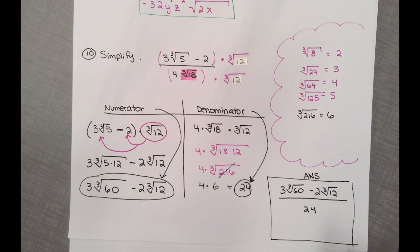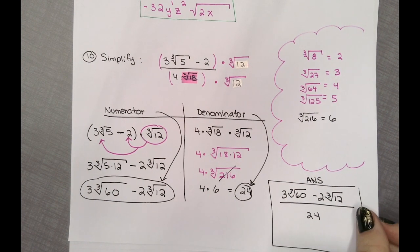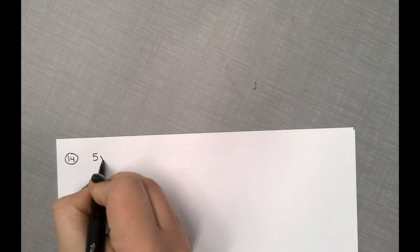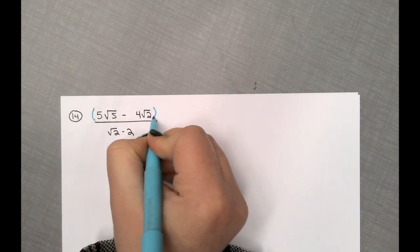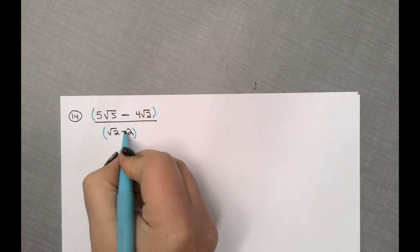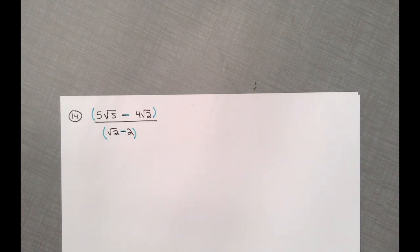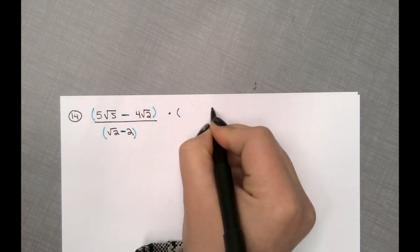Let's move on to the next section — simplifying by multiplying by conjugates. Let's do question number 14. On question number 14, we have 5 square root of 5 minus 4 square root of 2, all divided by square root of 2 minus 2. Please do not start crossing anything out. You have a binomial divided by a binomial — two terms in the numerator separated by subtraction, two terms in the denominator separated by subtraction. When you see a binomial in the denominator with a radical, your only option is to multiply by the conjugate.